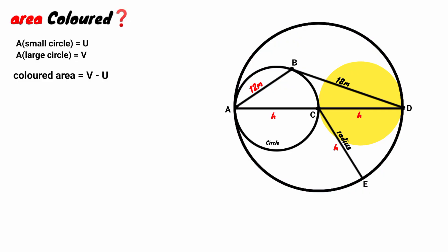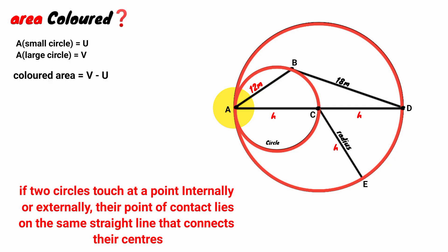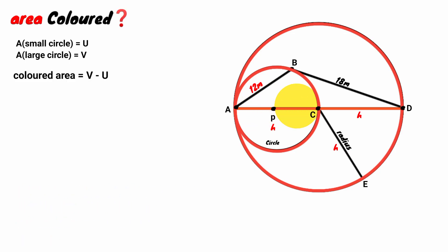The two circles touch at point A. From circle theory, when two circles touch at a point internally or externally, their point of contact lies on the same straight line that connects their centers. Line AE is that straight line, on which the point of contact and the center of the large circle lie, so the center of the small circle also lies on it. We locate the center, call it P. This segment and this are radii of the small circle — assume their length to be r.